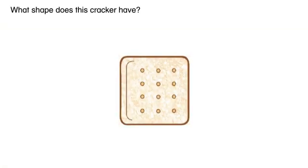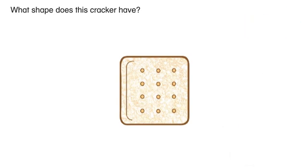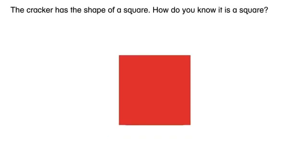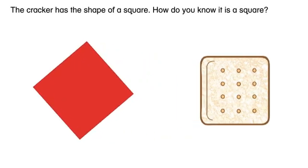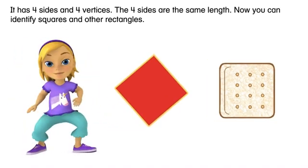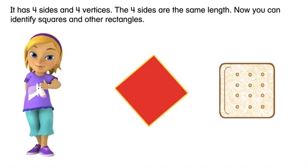What shape does this cracker have? The cracker has the shape of a square. How do you know it is a square? It has four sides and four vertices. The four sides are the same length. Now you can identify squares and other rectangles.